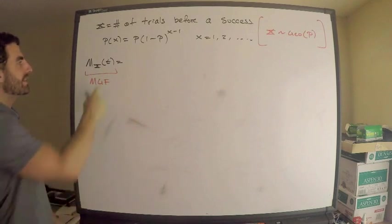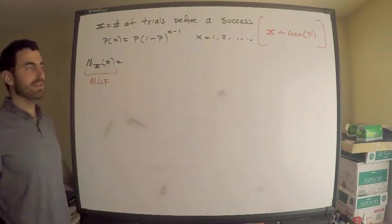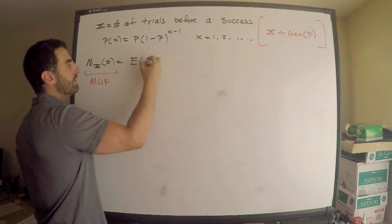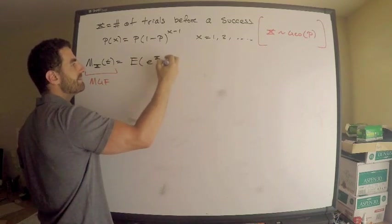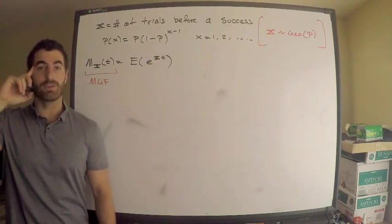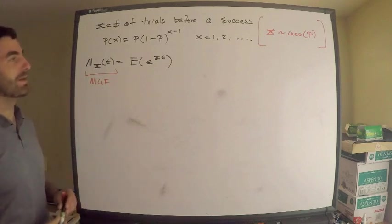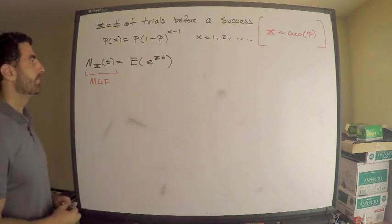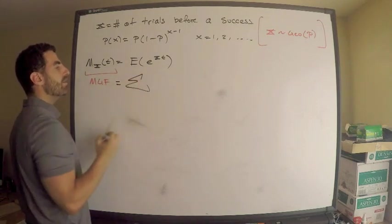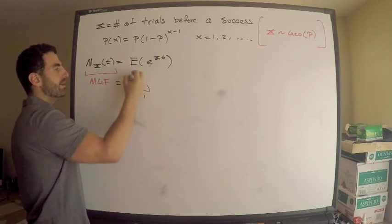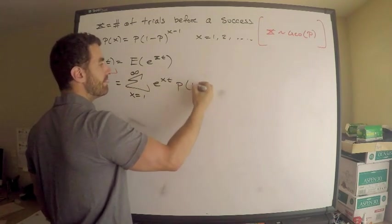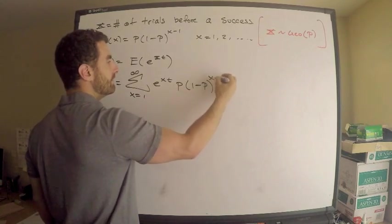What is the MGF — the moment generating function of my random variable X as a function of t? By definition, this is equal to the expected value of e raised to the random variable X times t. Keep in mind that the trials for a geometric random variable are independent — we will need that. This equals the following: I just need to sum up all my x's, x goes from 1 to infinity, of e to the little x times t, times the probability mass function.